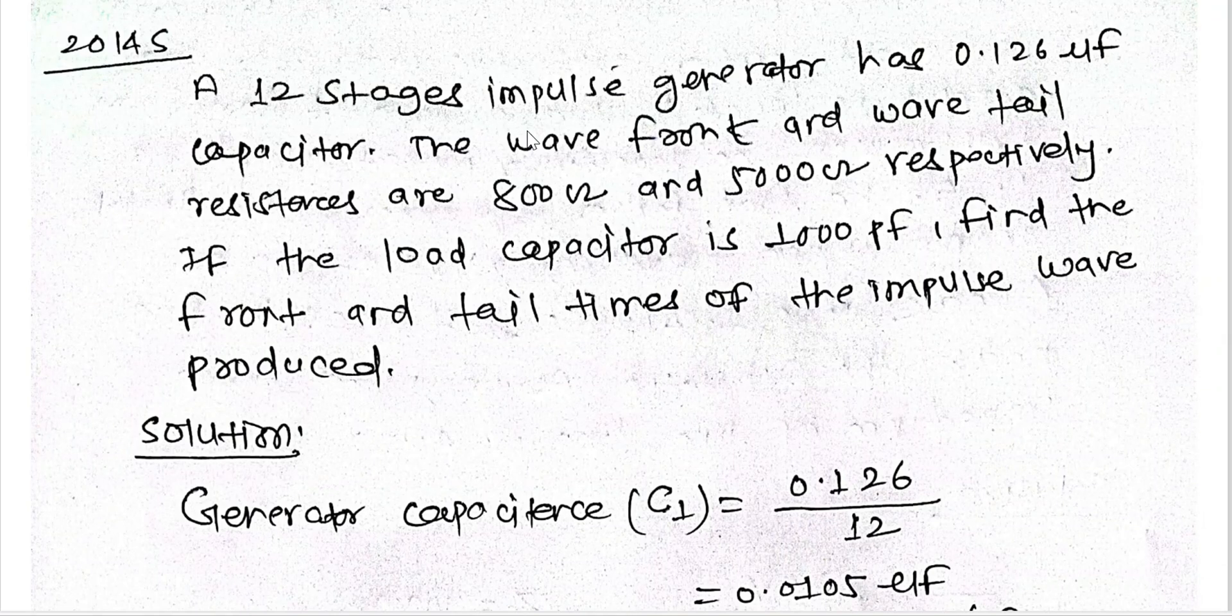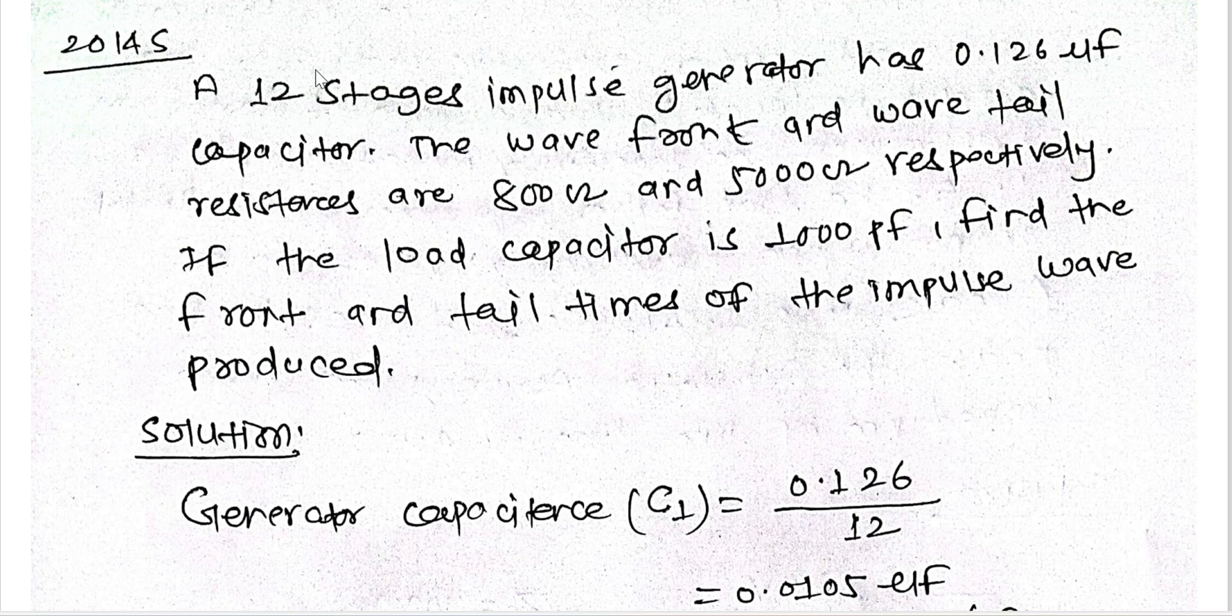Hello everyone, welcome to numerical series of high voltage. Today our problem is a 12-stage impulse generator has 0.126 microfarad capacitor. The wave front and wave tail resistance are 800 and 500 ohms respectively. If the load capacitor is 1000 picofarad, find the front and tail time of the impulse wave produced.